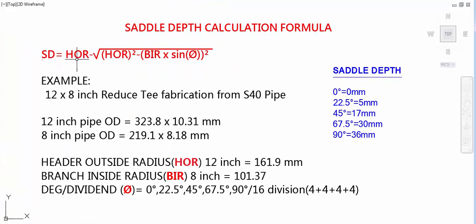Saddle depth calculation formula: SD equals HOR minus root of HOR the whole square minus BIR into sin theta the whole square.